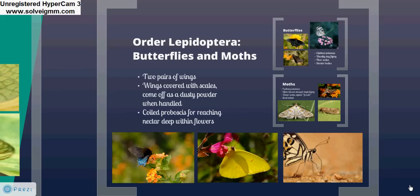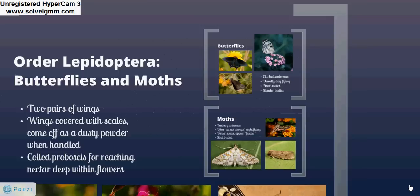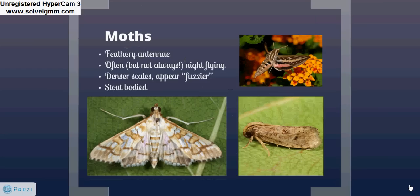One of the more widely recognized and appreciated insect orders is Lepidoptera — the butterflies and moths. They have two pairs of wings covered with scales, which come off as a dusty powder when handled, and a coiled proboscis for reaching nectar deep within flowers. People commonly confuse butterflies with moths. Butterflies typically have clubbed antennae, which are slender at the base and thicker at the ends; they're usually day-flying, have finer scales, and more slender bodies. Moths have feathery antennae and are often, but not always, night-flying — the upper right photograph shows a sphinx moth, which is a day-flying moth. Moths have denser scales, making them appear fuzzier, and are often more stout-bodied.